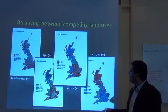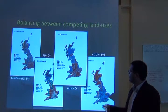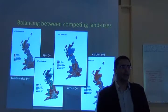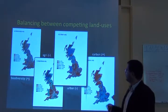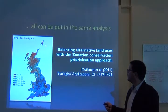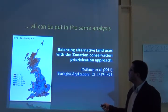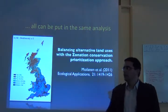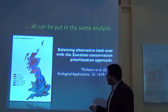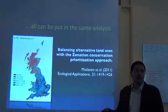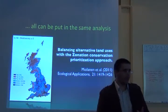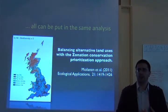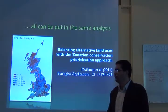One solution maximizes biodiversity retention alone. Another maximizes biodiversity retention while avoiding agricultural areas. You can put all of this together in a single analysis and end up with a map showing priorities considering everything simultaneously. When a place is identified as top priority, it means it scores well for carbon sequestration, biodiversity, and avoids conflict with agriculture and urbanization — all being optimized together.